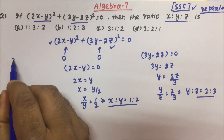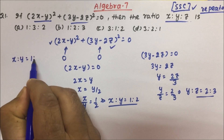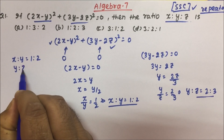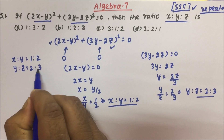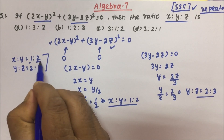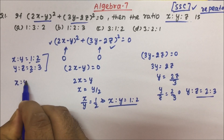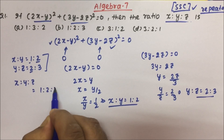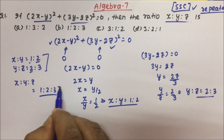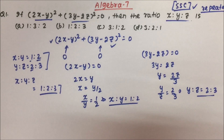Now you see: x : y = 1 : 2 and y : z = 2 : 3. You can see that y is the same in both ratios, so I can directly write x : y : z = 1 : 2 : 3. Today, whatever questions I am going to discuss, all the problems will be very important.